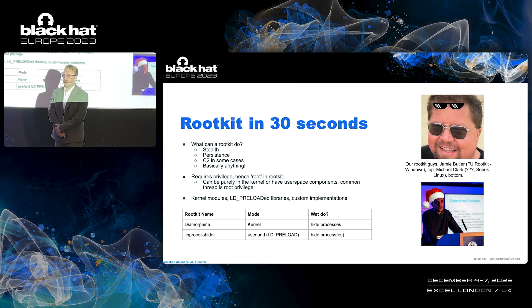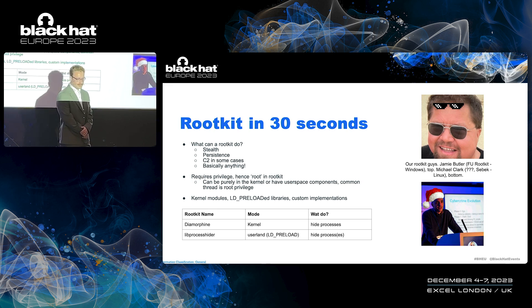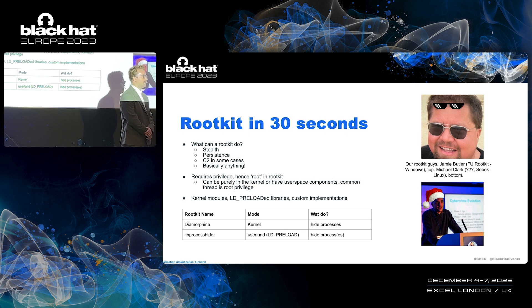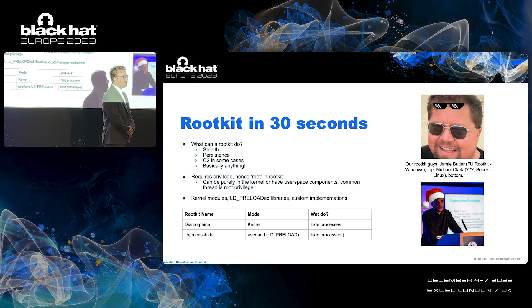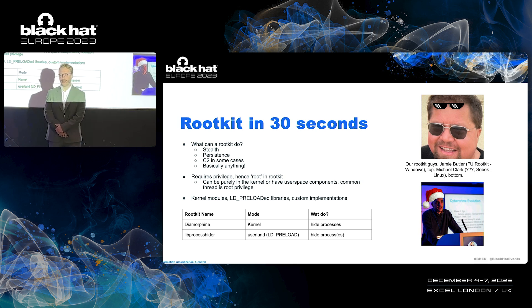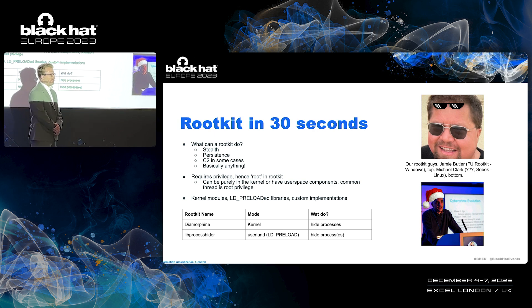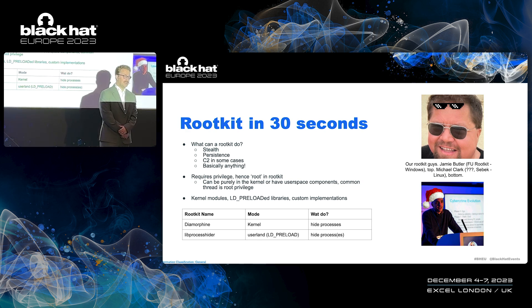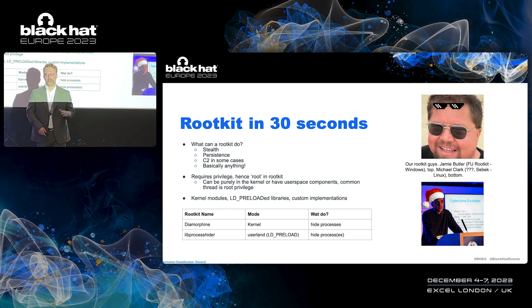For the higher level, more sophisticated ones, you also use them to maintain command and control. And the sky is the limit — that's what you can do once you are root, which is why the bullet point says 'basically anything else.' It does require privilege, so you need to be root to run a rootkit. You can have a kernel module, which is the most common form, but you can also have user space components — and the common thread between the two is that you do have root privilege in both cases.